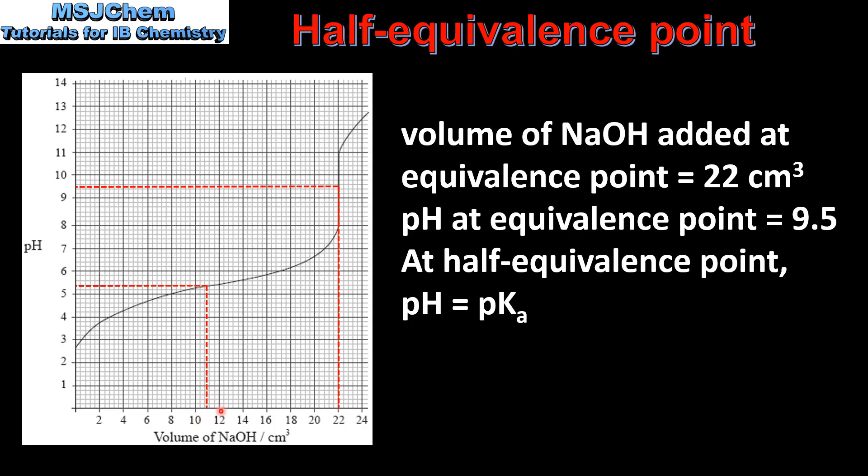The half equivalence point is at 11 cm³, so we draw a line up to the curve and then across to the y-axis, and we can see that the pH is 5.4. Therefore, the pKa of the weak acid is also 5.4.